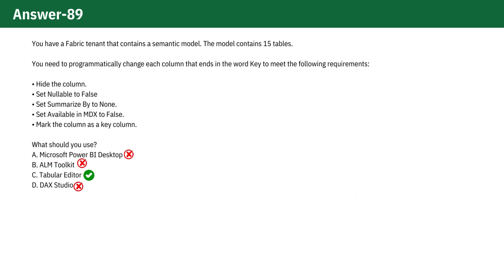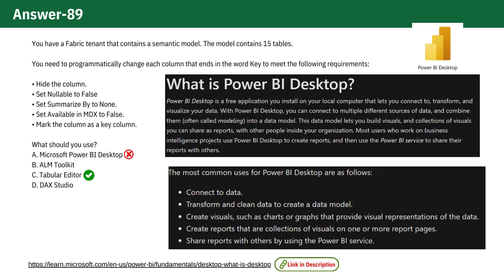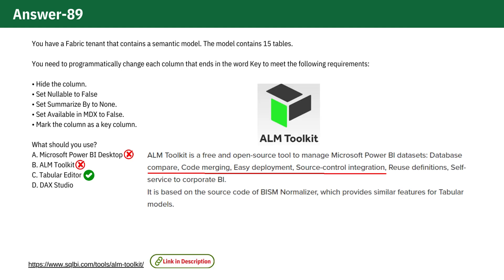All other options are incorrect. A. Microsoft Power BI Desktop is primarily used for building and designing reports, and while you can manually adjust column properties, it is not designed for batch processing or scripting changes across multiple columns. It would require a lot of manual effort to apply these changes to each column individually. B. ALM Toolkit is mainly used for comparing and deploying changes between different Power BI models or Analysis Services projects. It does not offer the same level of programmability or scripting capabilities as Tabular Editor for modifying multiple columns within a model.